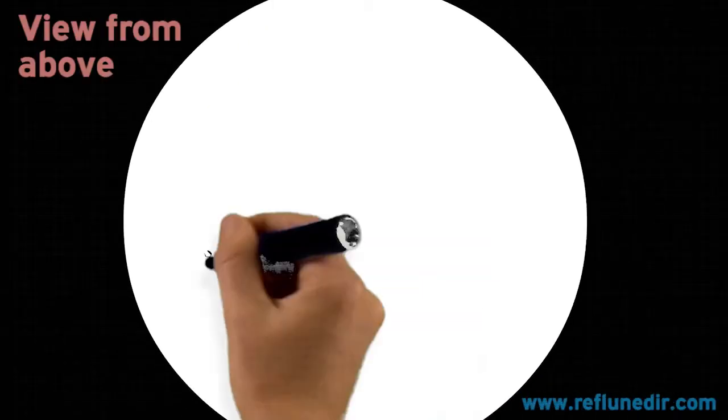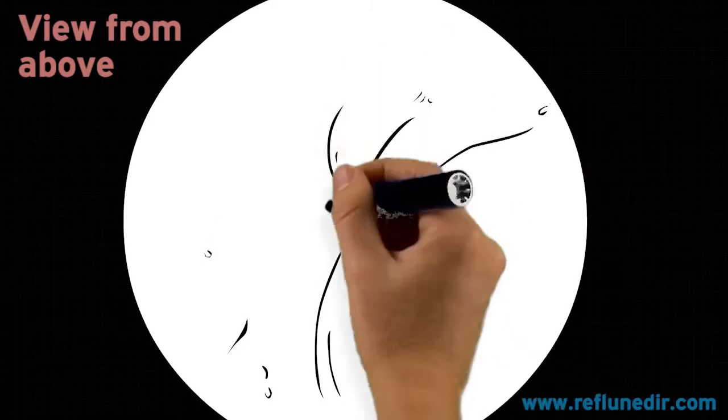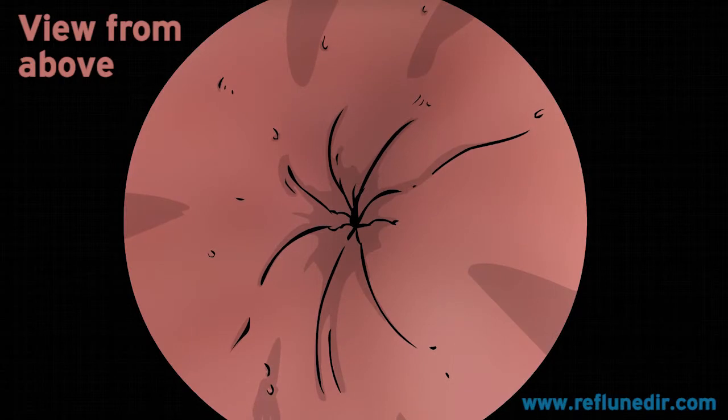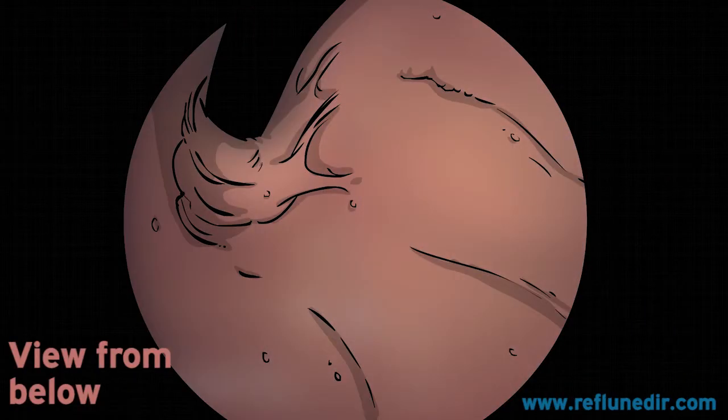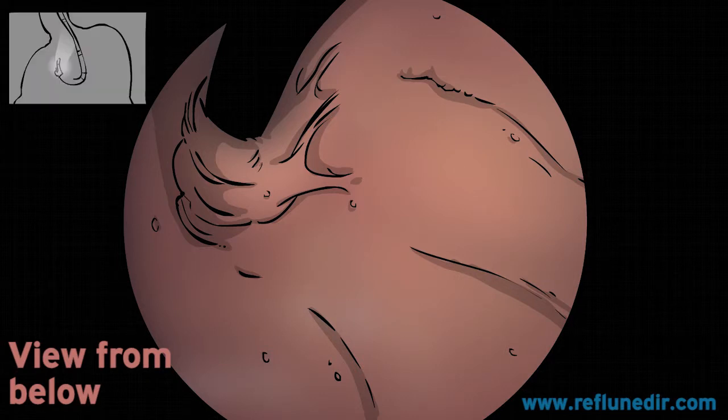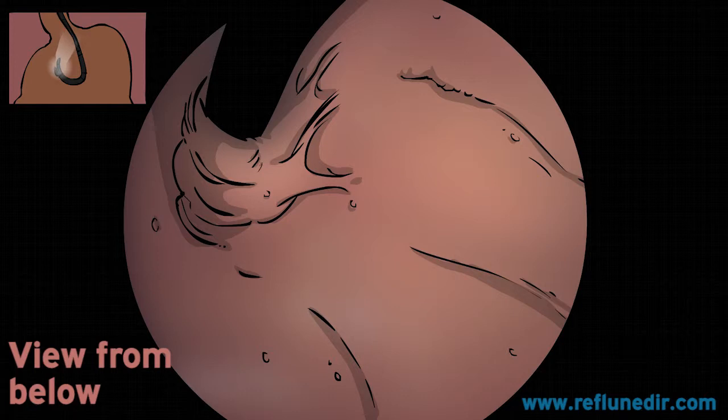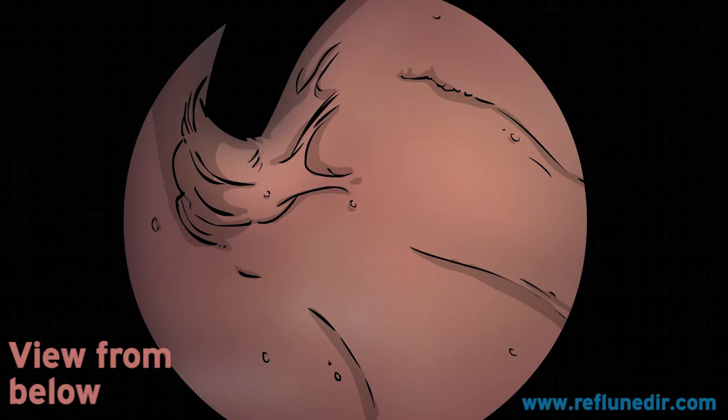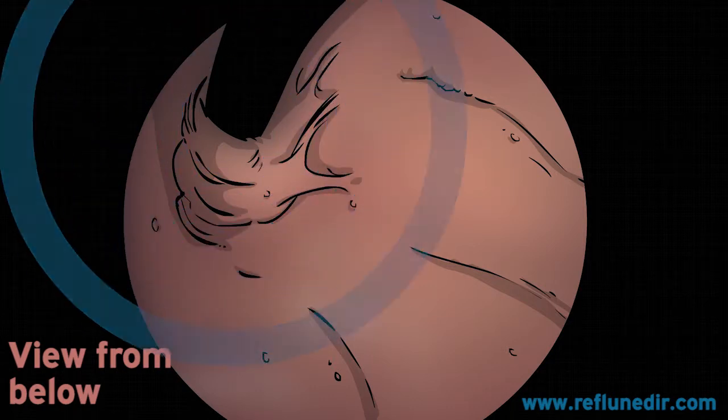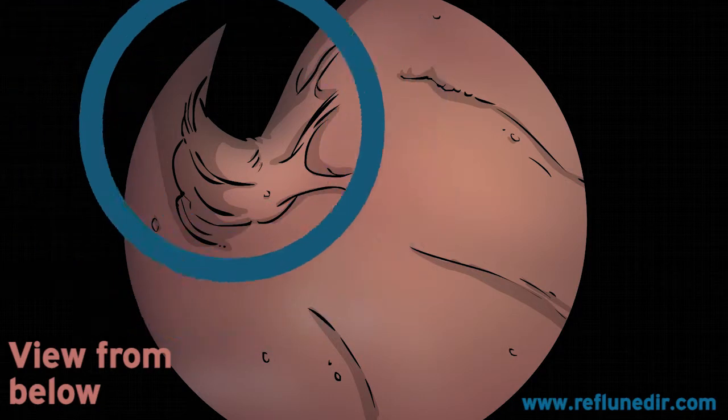When we look at a healthy valve with the endoscope, it should look like this. At the tip of the endoscope, there is a tiny camera and a light source. It makes a U-turn in the stomach and looks at itself. So the black tube is the endoscope itself and the surrounding pinkish tissue is the stomach. Normally, there is no gap between the two as the gastric valve grasps the endoscope making the valve action.